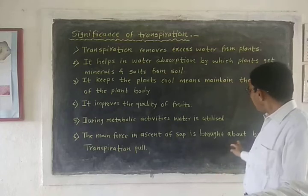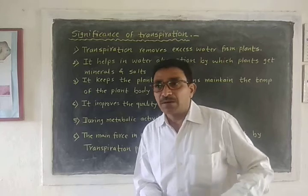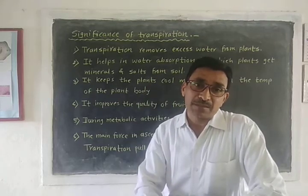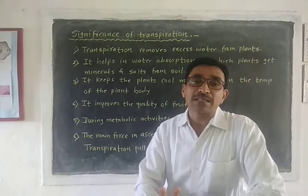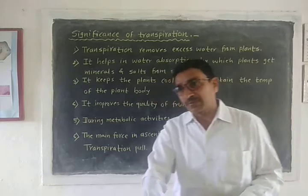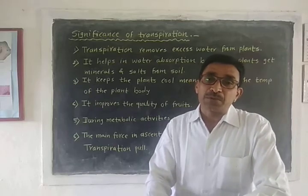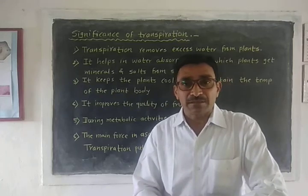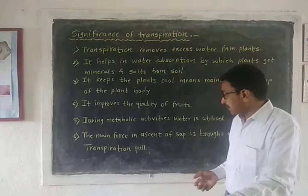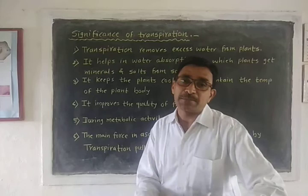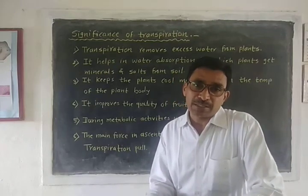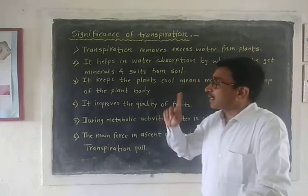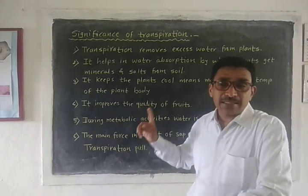The last significance is that transpiration is the main force in the ascent of sap. The movement of water from the root to the aerial parts of the plant is called the ascent of xylem sap. Due to transpiration, a tension is created, and because of this transpiration tension, a force is generated that drives the ascent of sap. Though millions of plants die each year due to excess transpiration, transpiration also plays a significant role, and hence it is called a necessary evil.